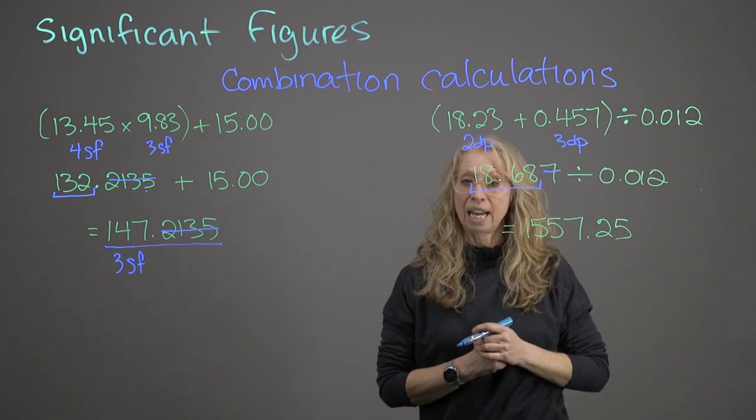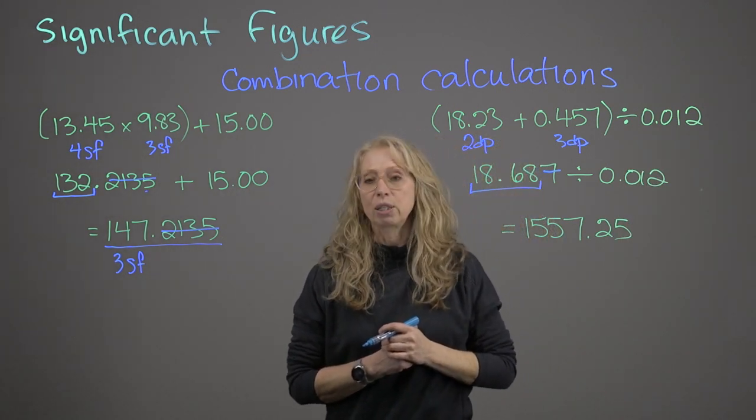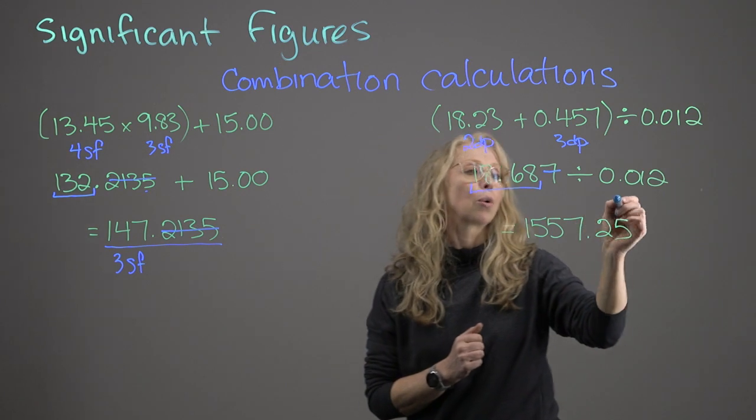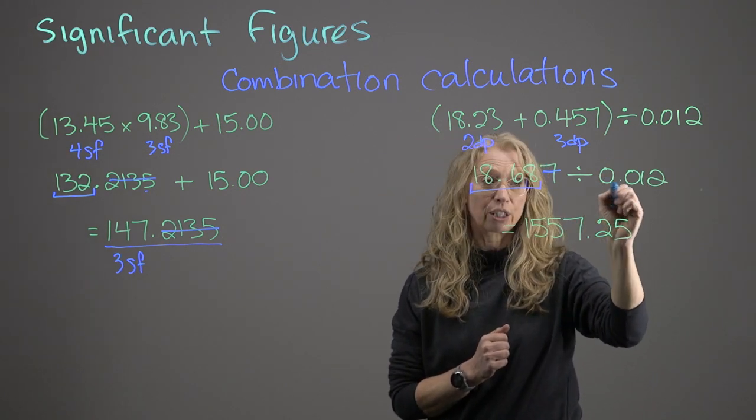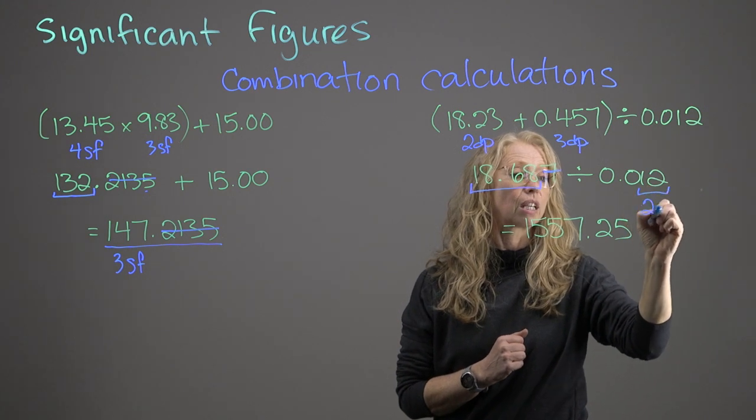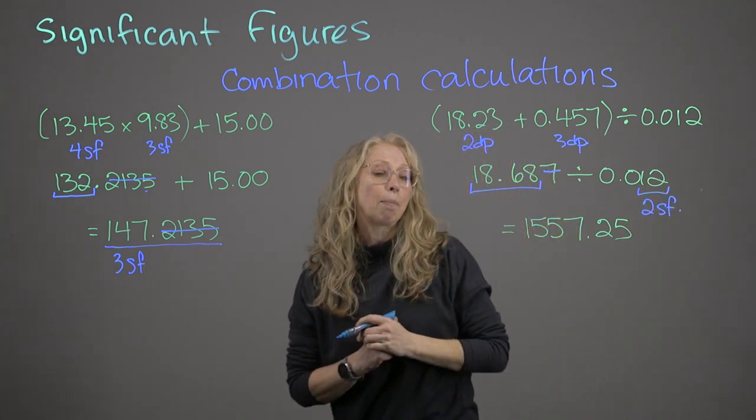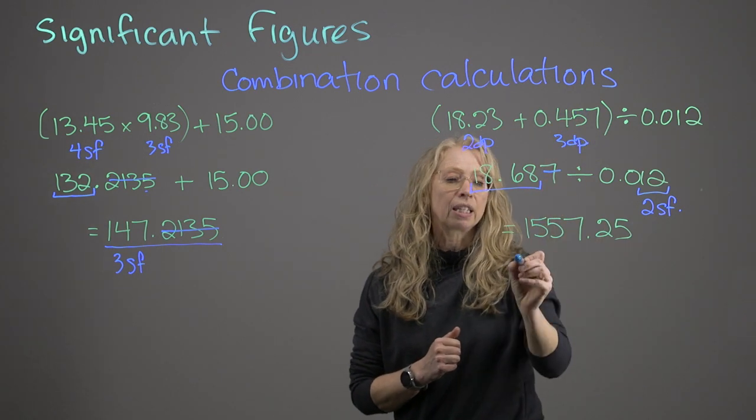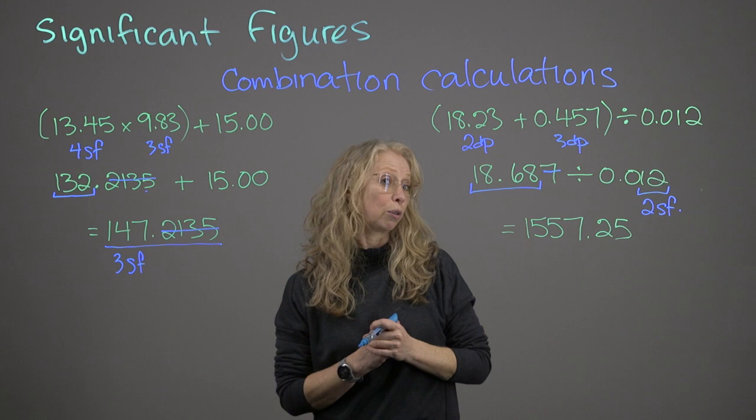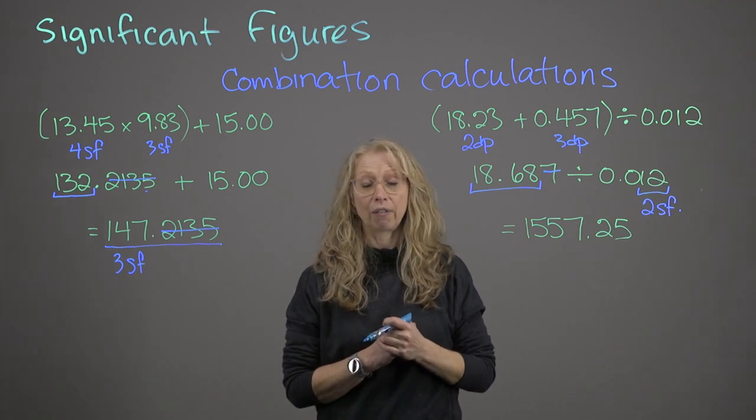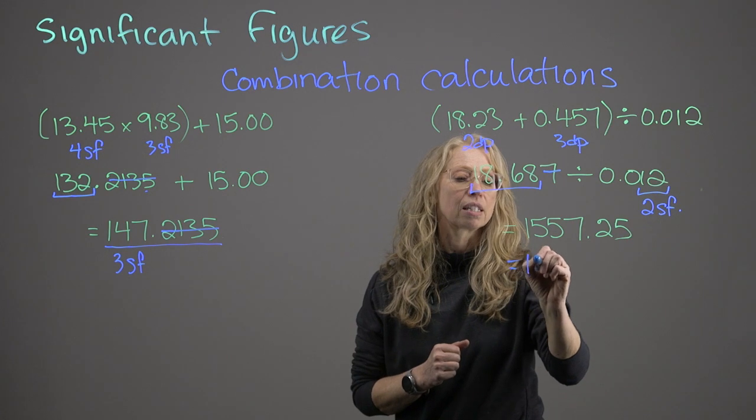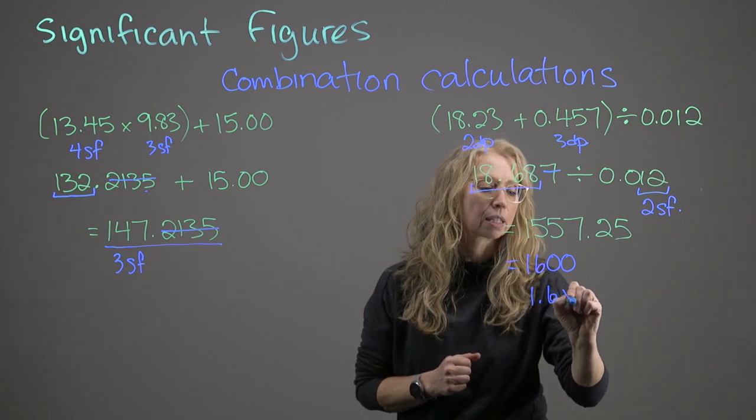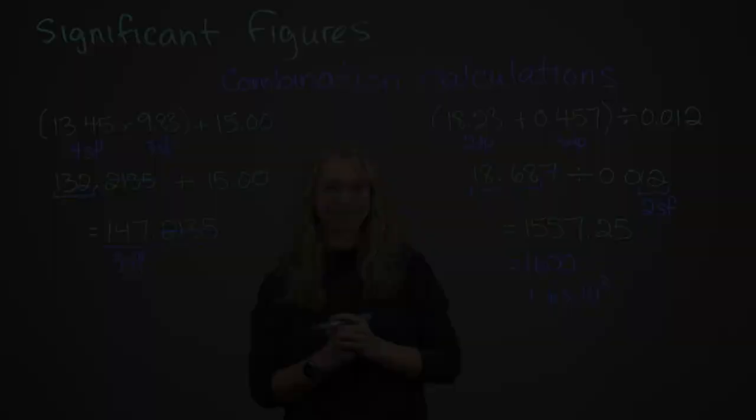Now, in this calculation, I now divide by 0.012. Division, multiplication, least number of sig figs. So how many sig figs is this? We don't factor in the leading zeros, just these. So two significant figures. Now, my answer cannot have more than two significant figures. I plug all of this into my calculator. I get 1,557.25, and I have to convert that to two significant figures. I can report it as 1,600, or I can put it into scientific notation as 1.6 times 10 to the 3. See ya!